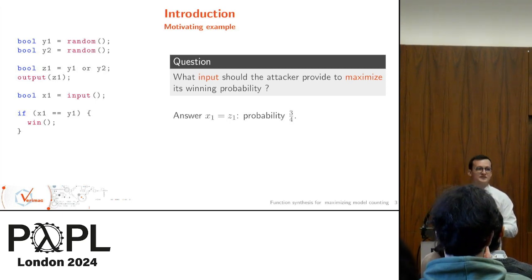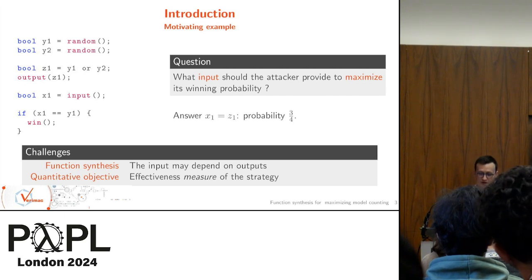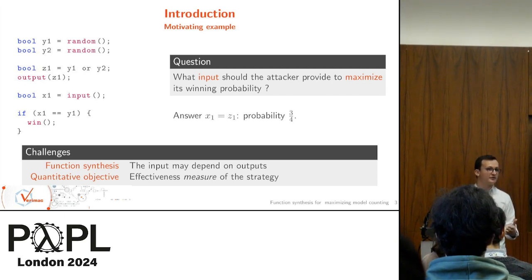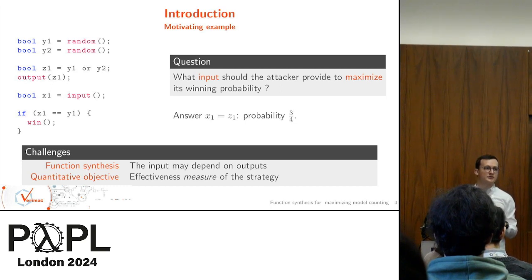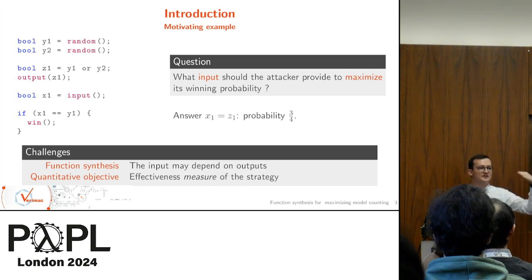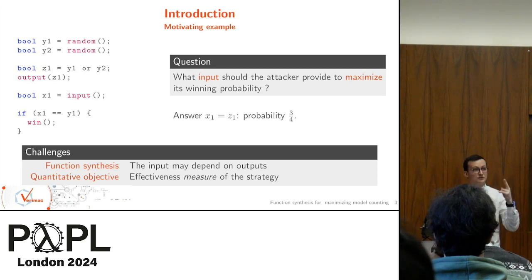In this setting, the normal question to ask is, what input should the attacker provide in order to maximize its winning probability? In this case, the actual answer is just to input what the program just outputted. And the winning probability is 3 over 4. We win a little bit more than if we just picked a constant value, but not enough to actually win in all cases. That already yields us the two key challenges of our problem. First of all, we have a function synthesis problem. The input of the attacker may depend on the outputs that have been done before. And second of all, we have a quantitative objective.